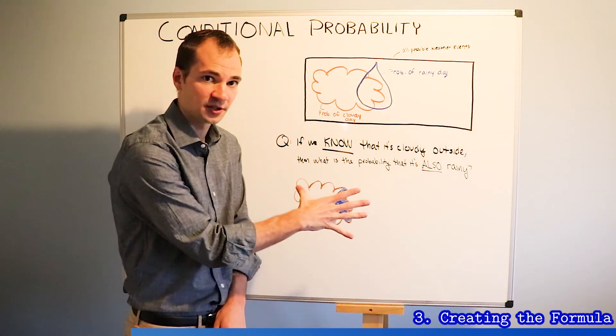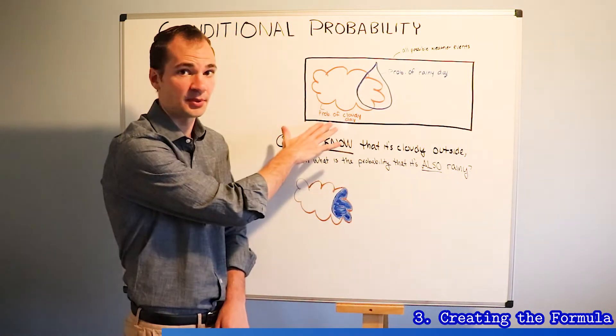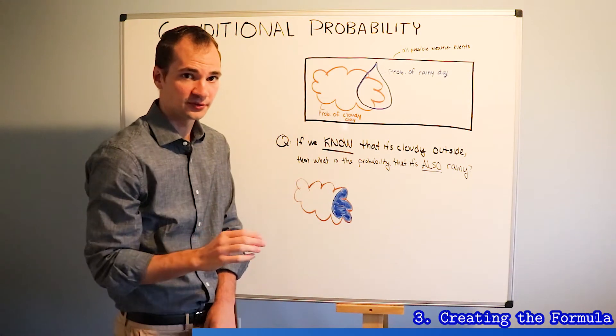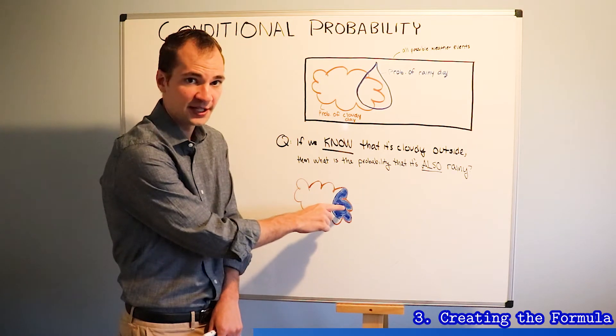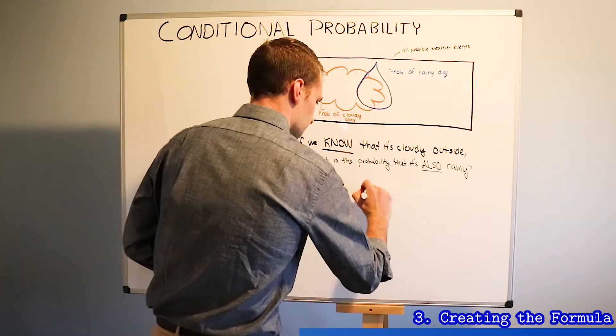But instead of divided by the entire sample space or the black box, now our available total area is just this cloud. So we're going to divide this shaded area by the area in this cloud.